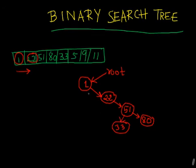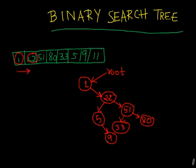Now we add 5. It is greater than 1 but less than 22, so 5 comes to the left of 22. Then we add 9 — it is greater than 1, less than 22, but greater than 5, so 9 comes to the right of 5. Then 11 is placed similarly. Note that the left child of 1 is completely null — there is no left child. This illustrates how the binary search tree is built.